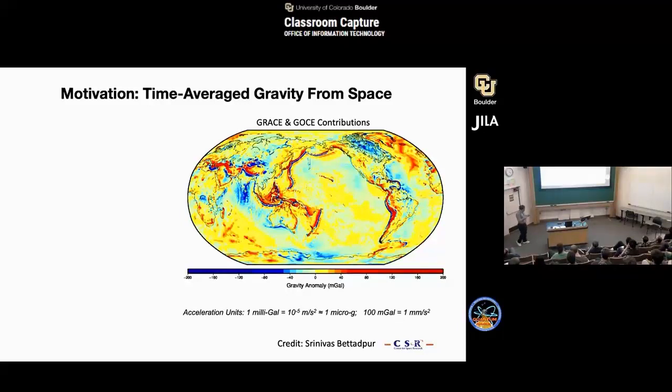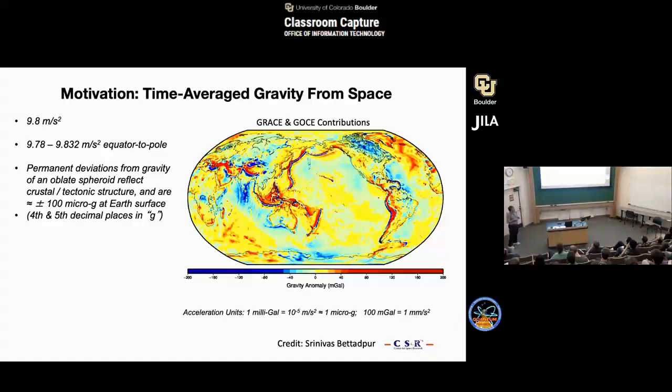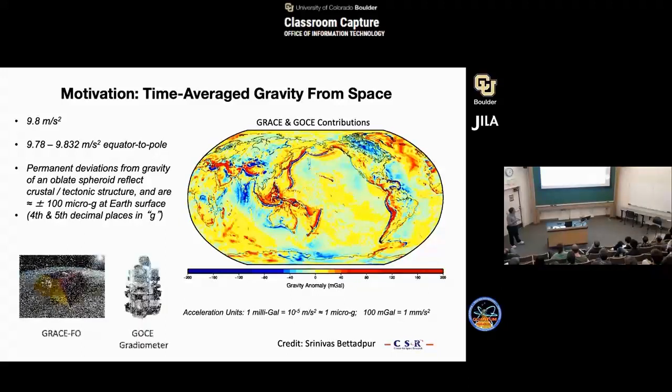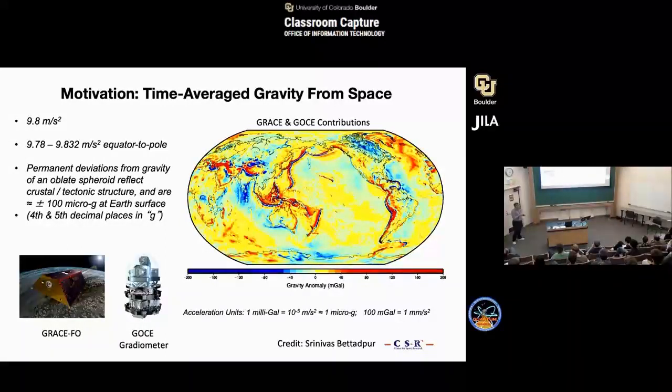We're looking at planet Earth and particularly at mass changes in planet Earth from space in a satellite. To give you an idea of what measuring gravity is all about, this is a picture from the GRACE and GOCE missions. It's basically a map of the gravity anomaly on Earth. The scale here is milligal. A milligal is about the same as a micro-g. We're talking here about things that change in the last four digits of the 9.8. Gravity on Earth is about 9.8 meters per second squared, but it's not constant and varies all over the globe.